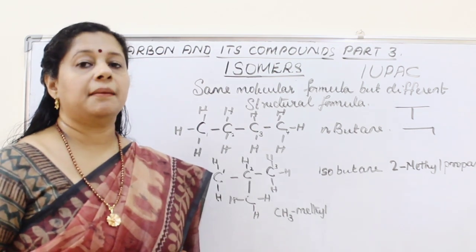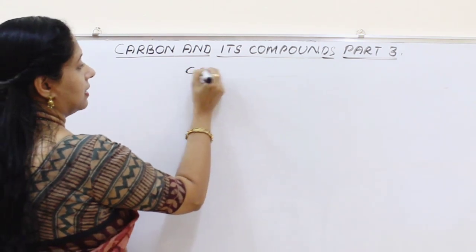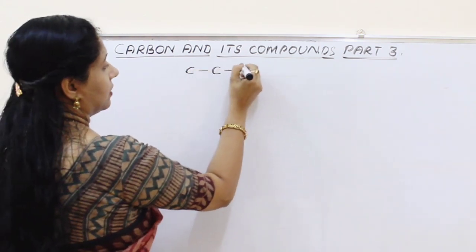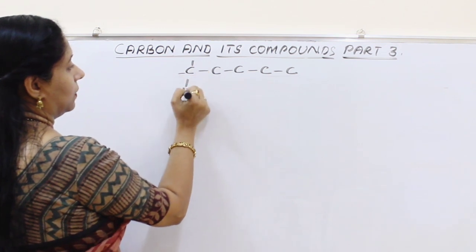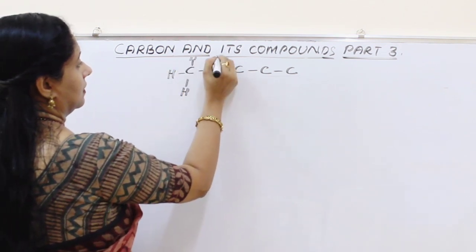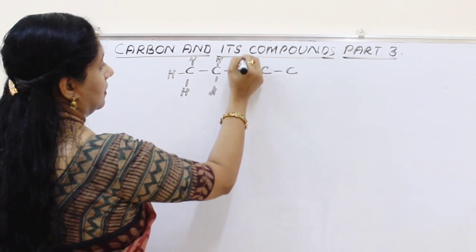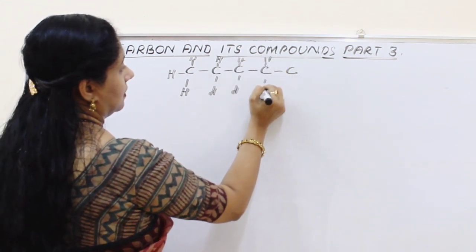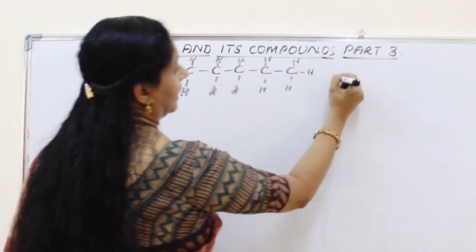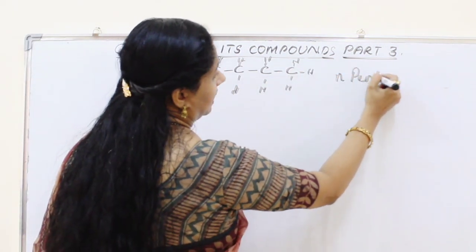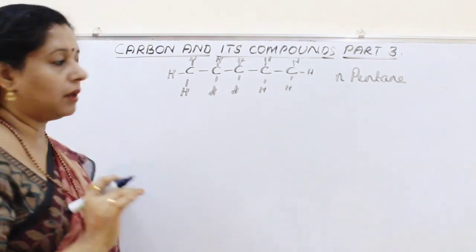Now we will see the isomers of pentane. The first one, as usual, is a straight chain with 5 carbon atoms in a row. This is called n-pentane, or normal pentane.